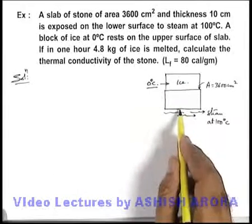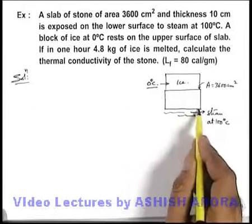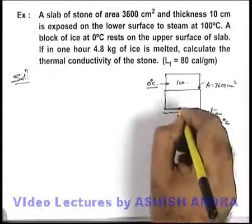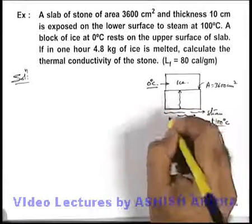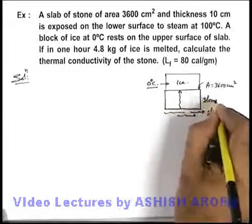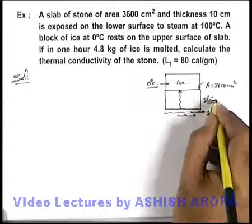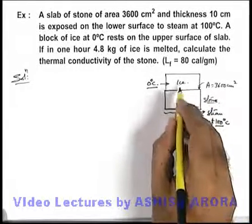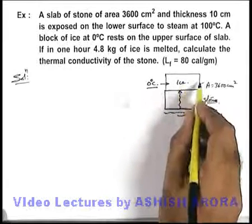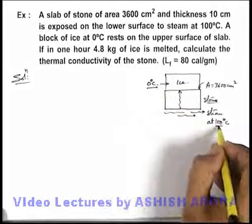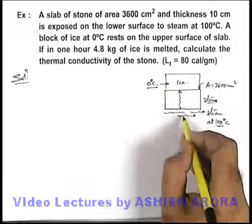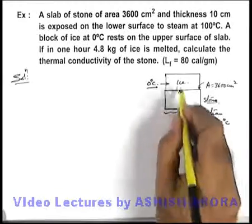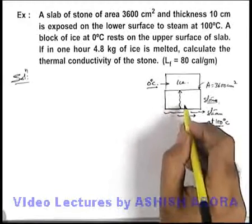Obviously, the temperature at the bottom surface of the stone is 100 degree centigrade. Through the stone, heat will be conducted toward the ice by the phenomena of thermal conduction. The heat which is being transferred will be used in melting the ice. And as zero and hundred degree centigrade temperatures are maintained, we can state that the thermal conduction taking place will be in steady state.